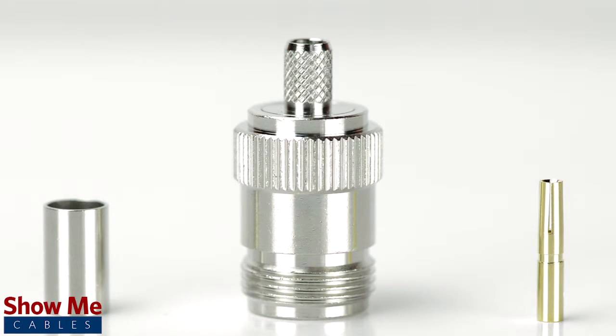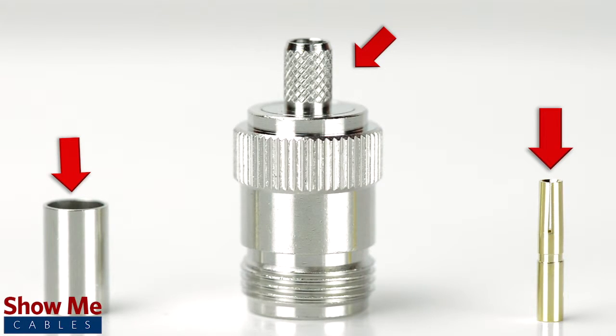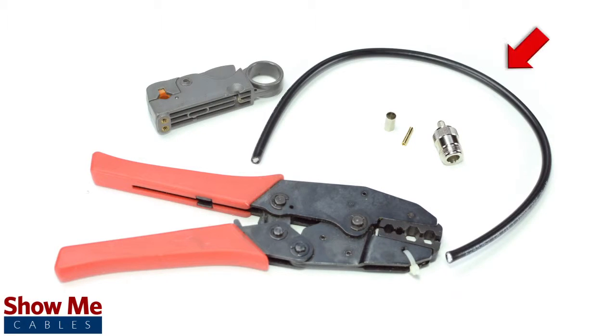The 3 piece connector consists of the connector housing, a ferrule, and the female pin. For this installation you will need RG58 or LMR195 cable, a strip tool, a crimp tool, and the crimp connector.